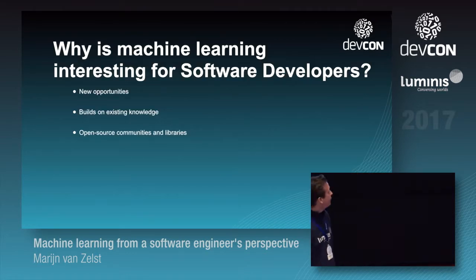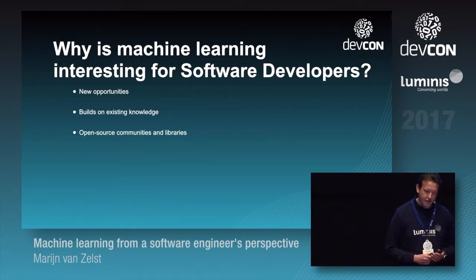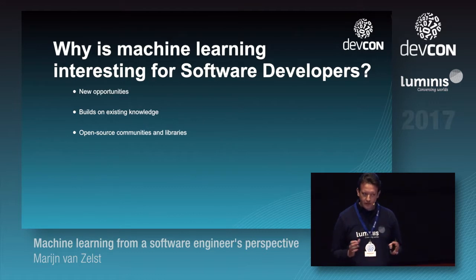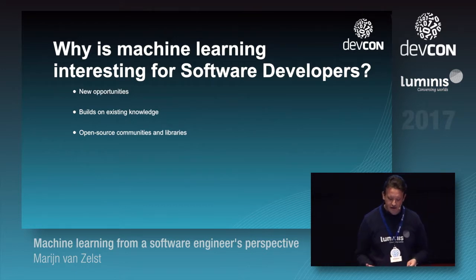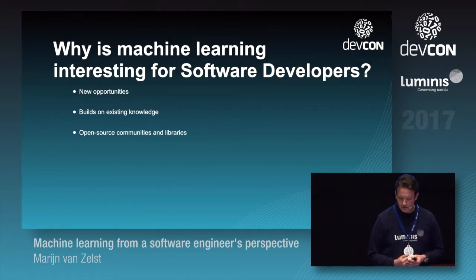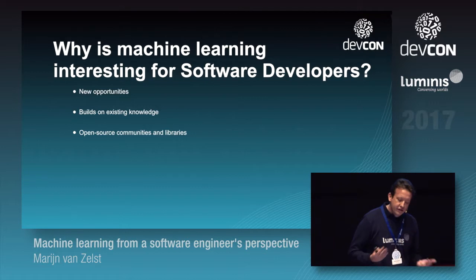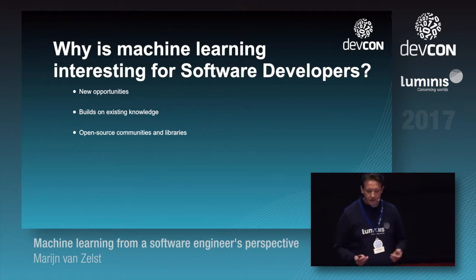Why do I think machine learning is interesting for us as software developers? Well, it creates new opportunities. It requires existing knowledge that we as software developers already have — knowledge about programming languages, about handling data. And in recent years, there's been a development in open source machine learning libraries, and as developers, we know how to use libraries.